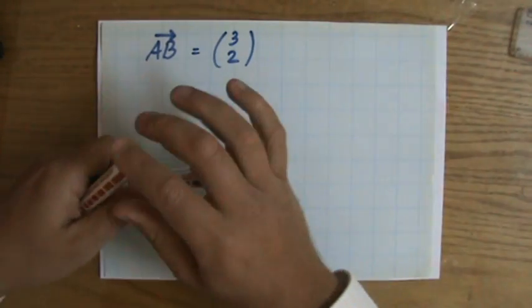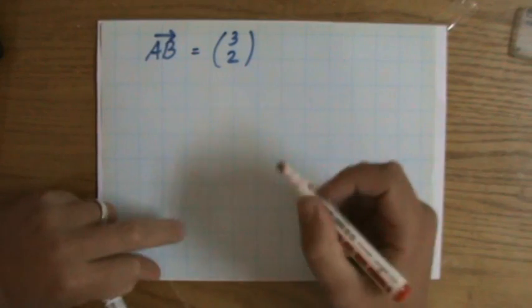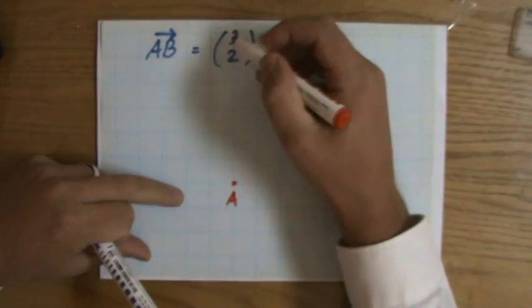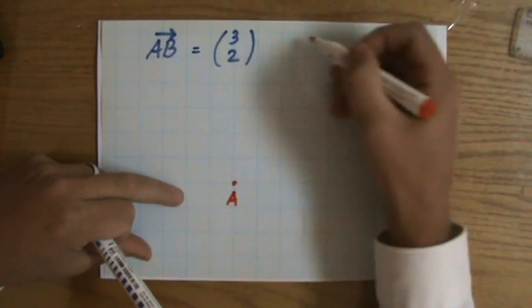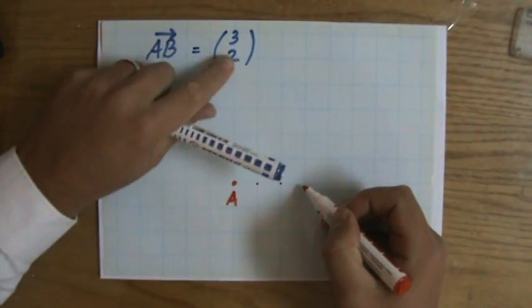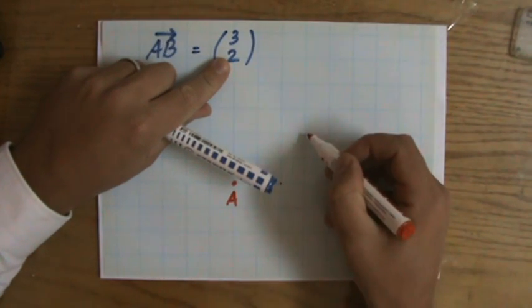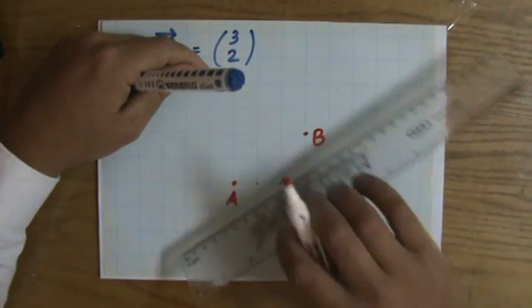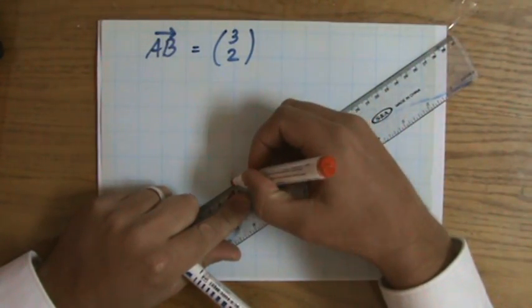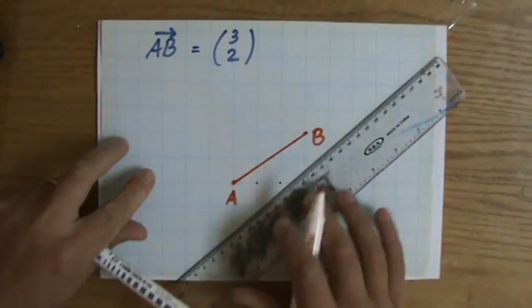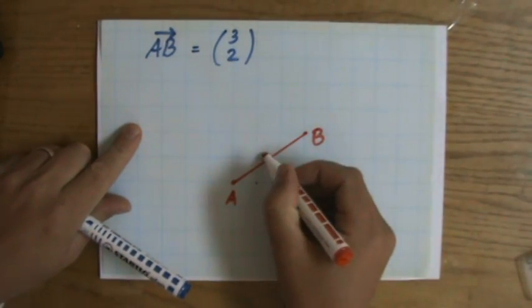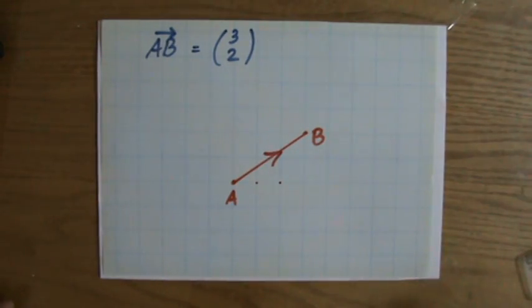Now, what does that mean, (3, 2)? It means from A, let's say A is here, it doesn't really matter. I'll put an A there. I go horizontally 3, that means 1, 2, 3, and vertically 2, so 1, 2, that will be B, and that will be the vector AB. And what is important, it not only has this particular magnitude or length, it also has a direction from A to B.